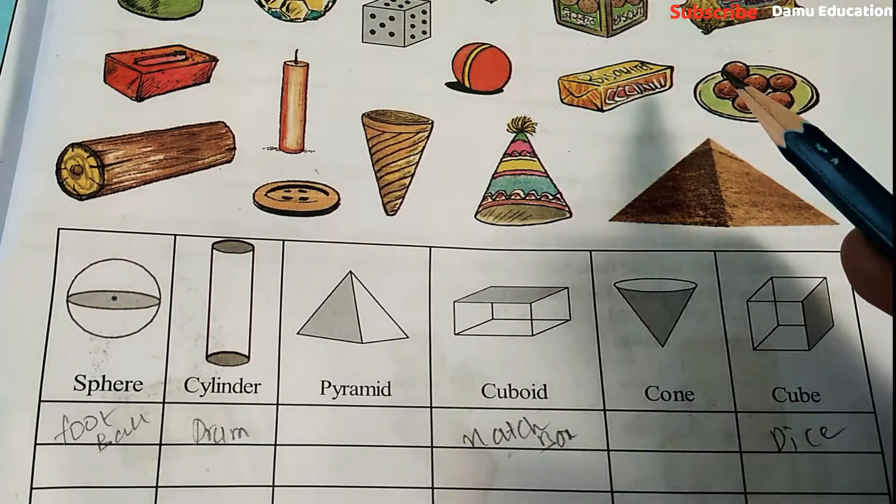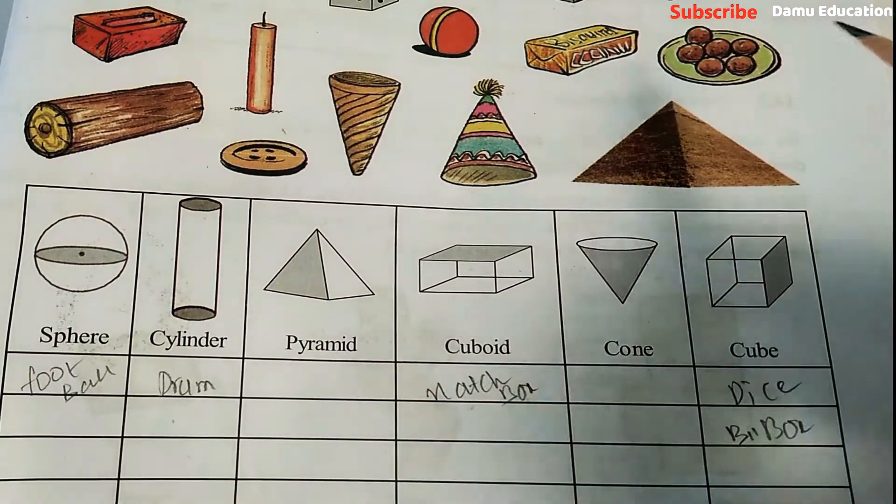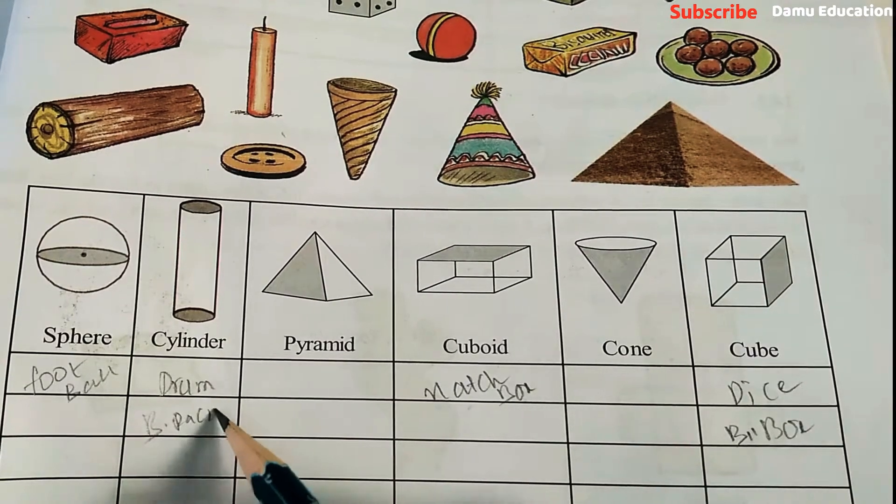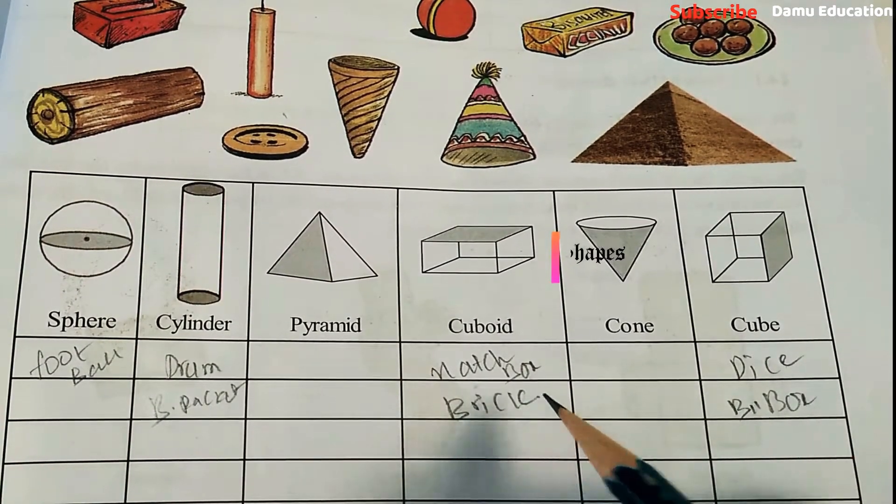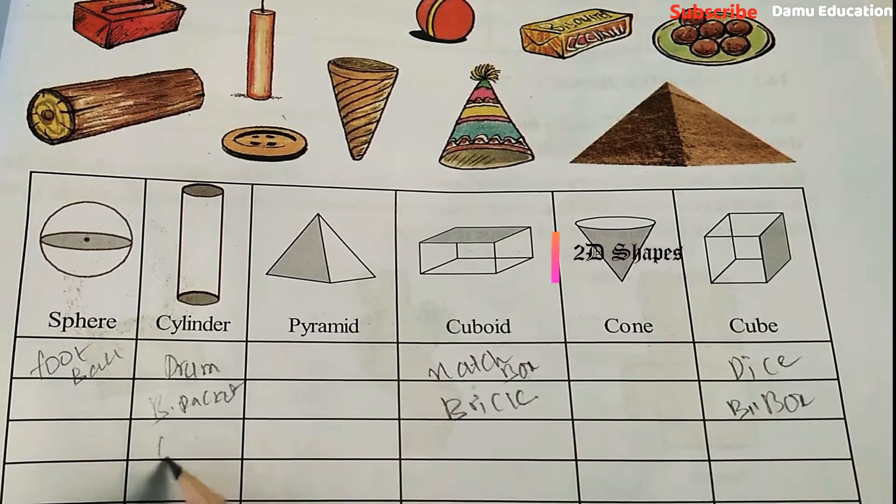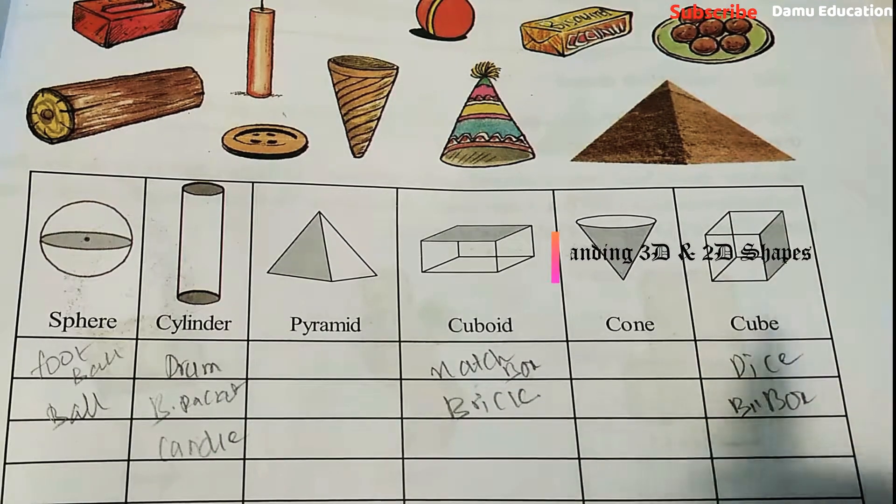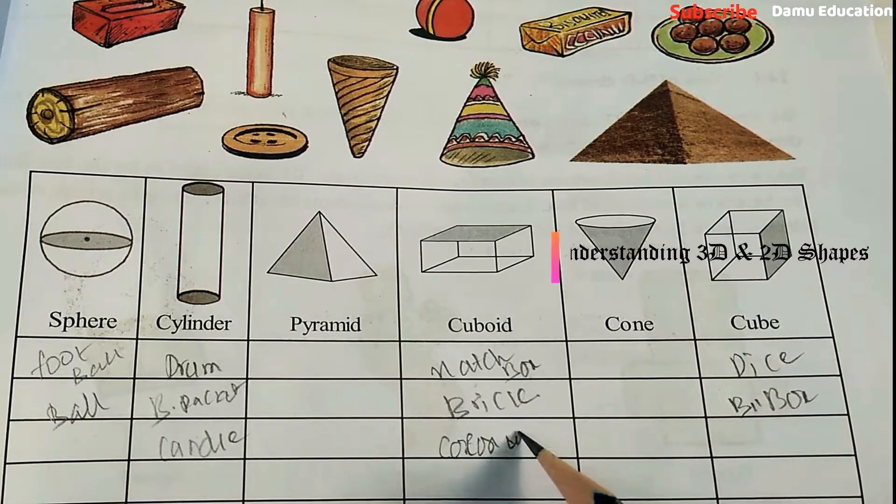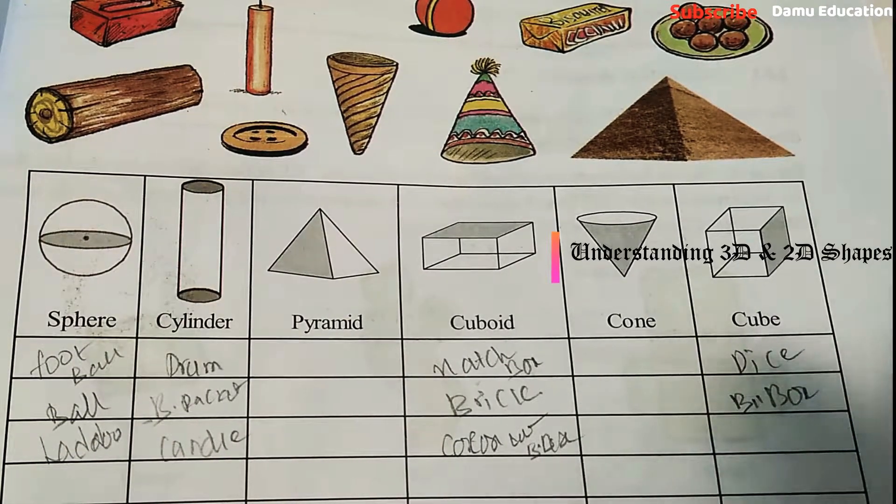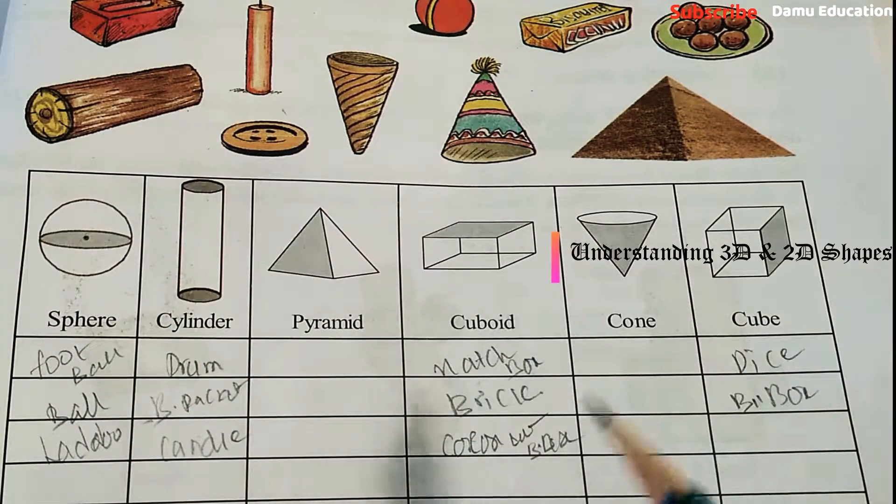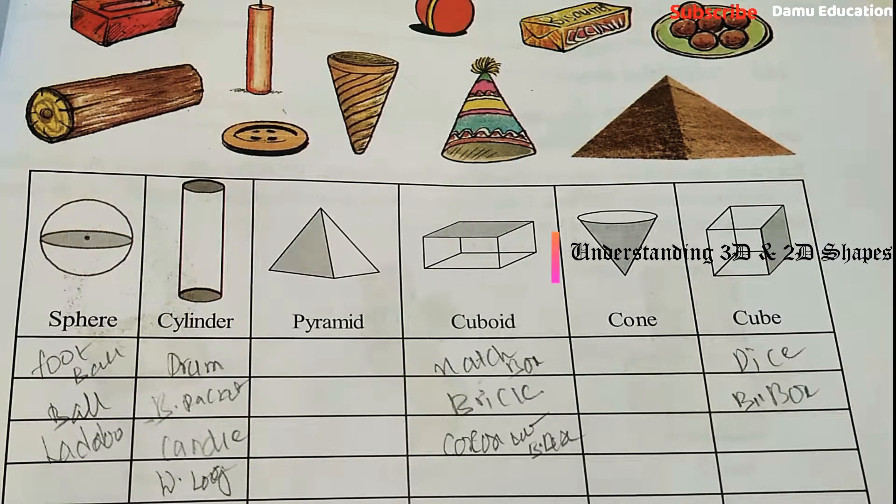Next, biscuit box is cube. Biscuit packet is cylinder shape. Brick is cuboid. Ball will be sphere. Coconut biscuit box is cuboid. Laddu will be sphere. Wood lock is cylinder. Button is also cylinder, extended in some manner.